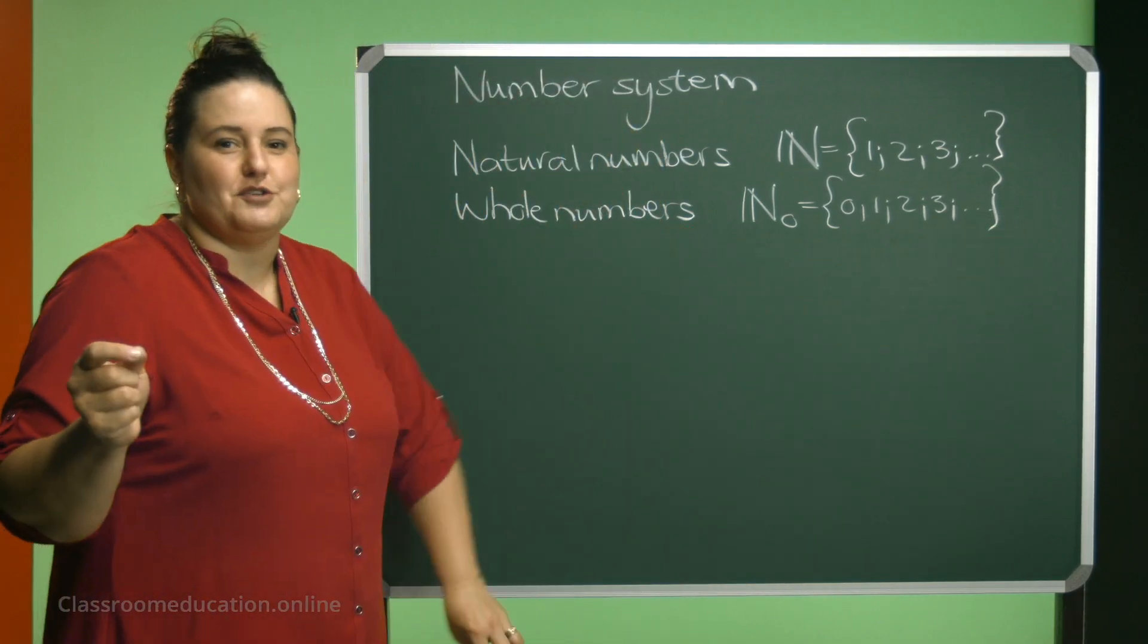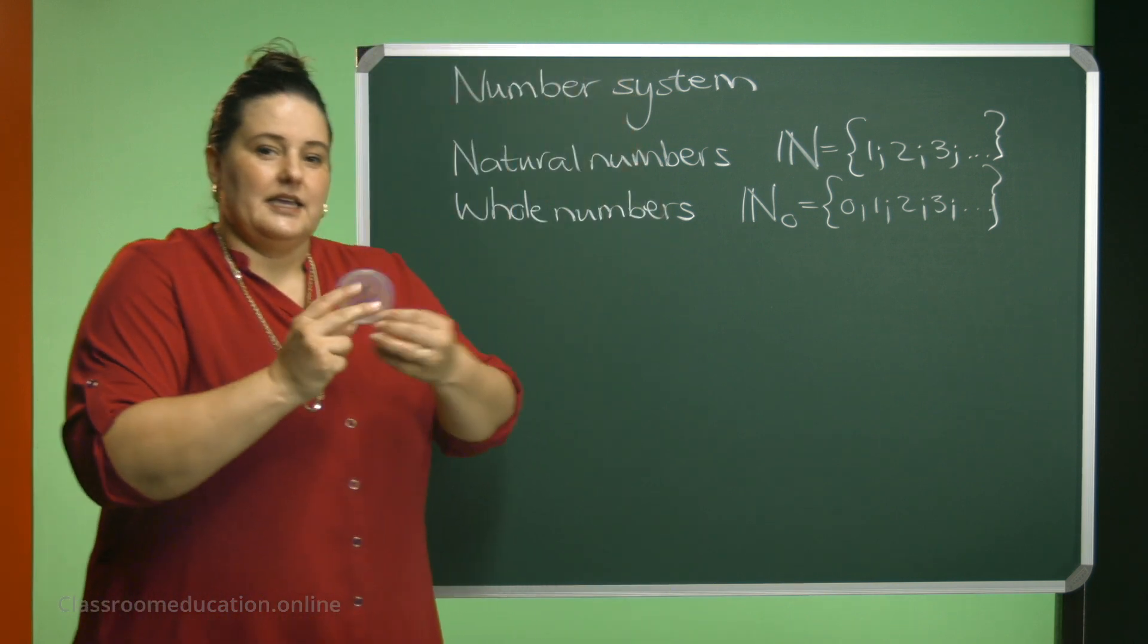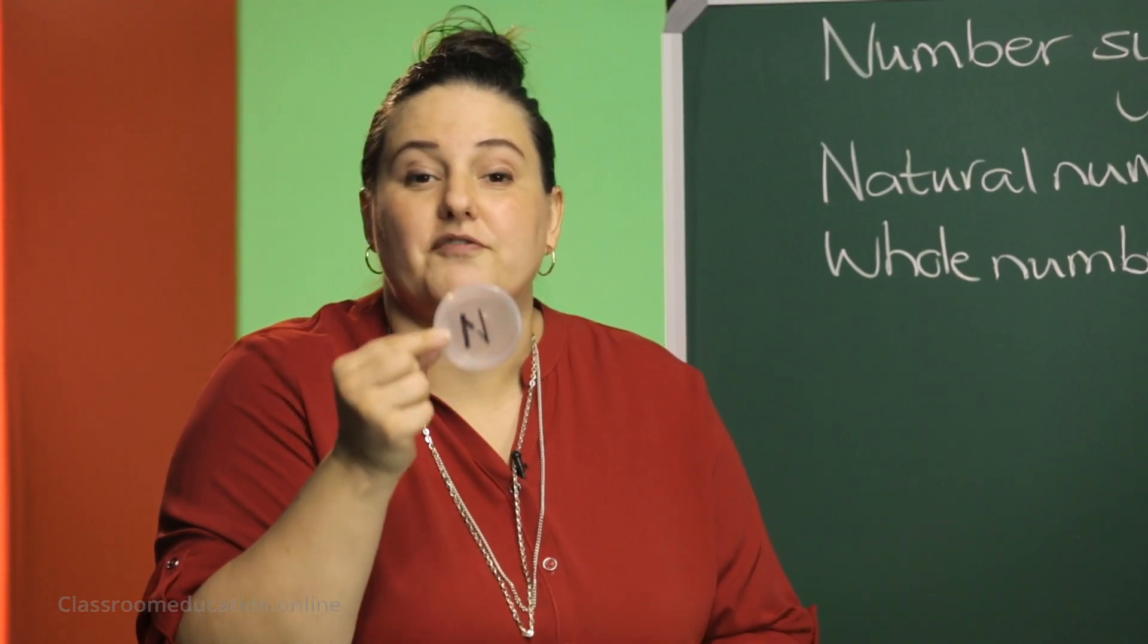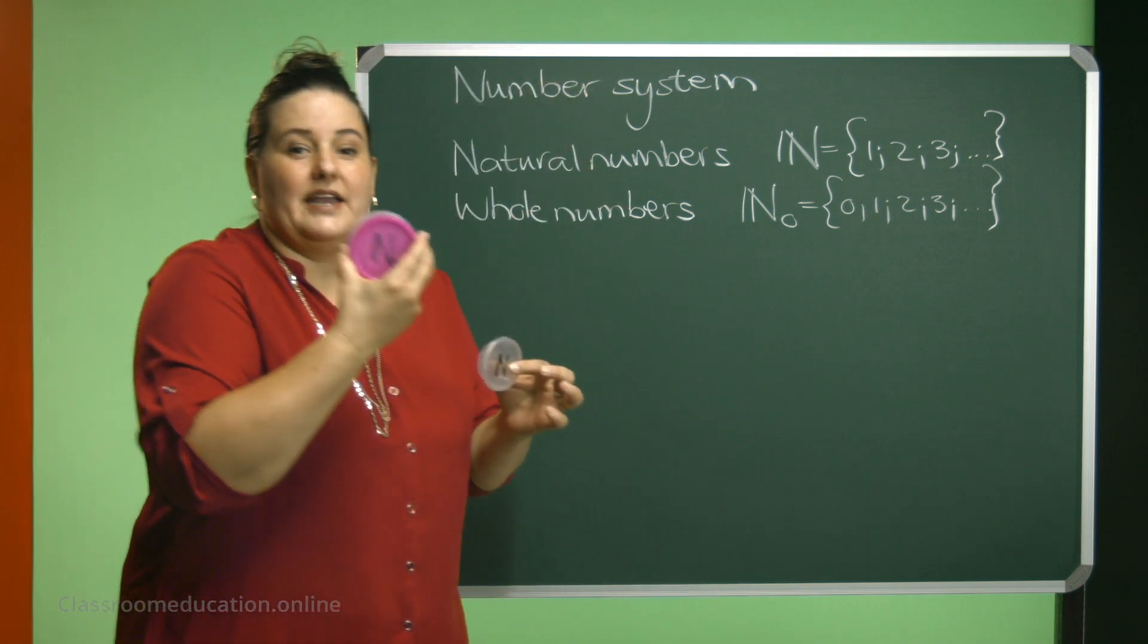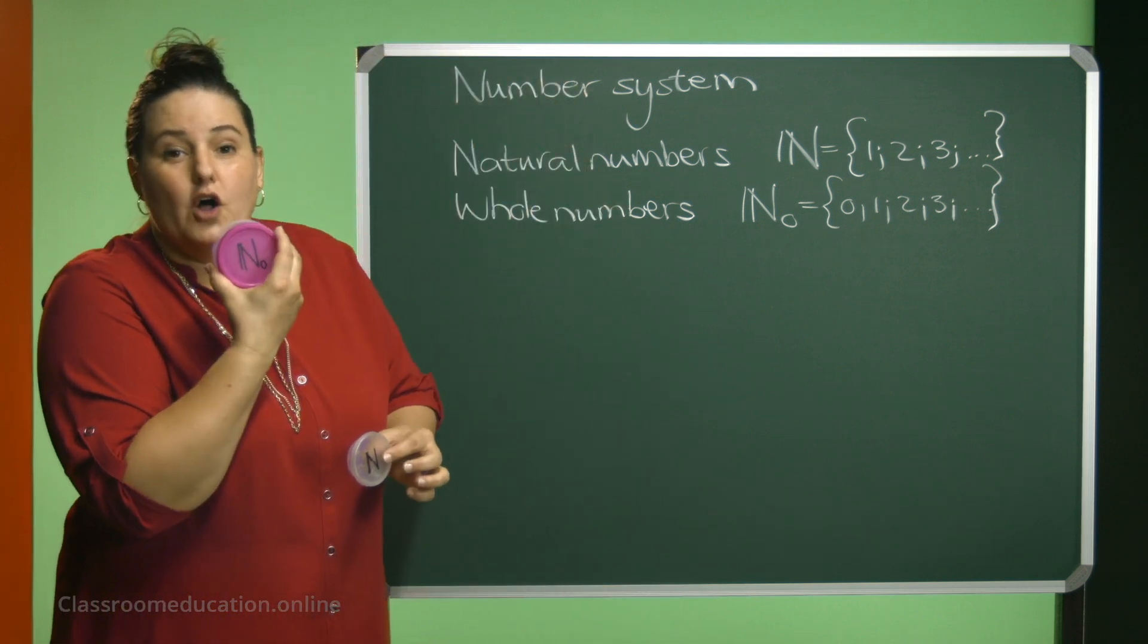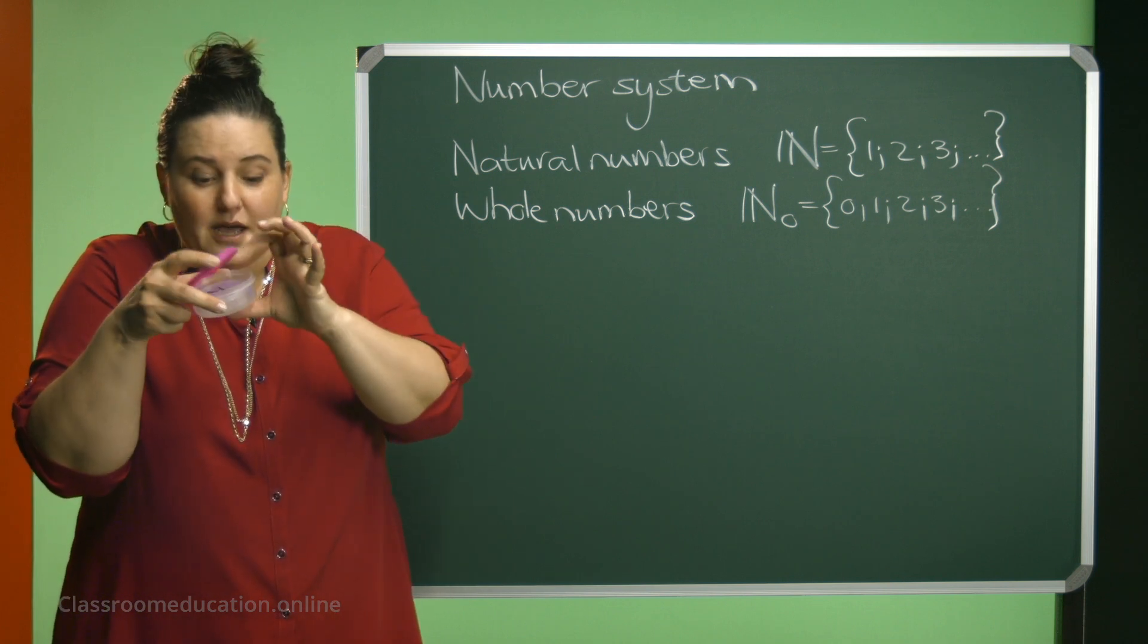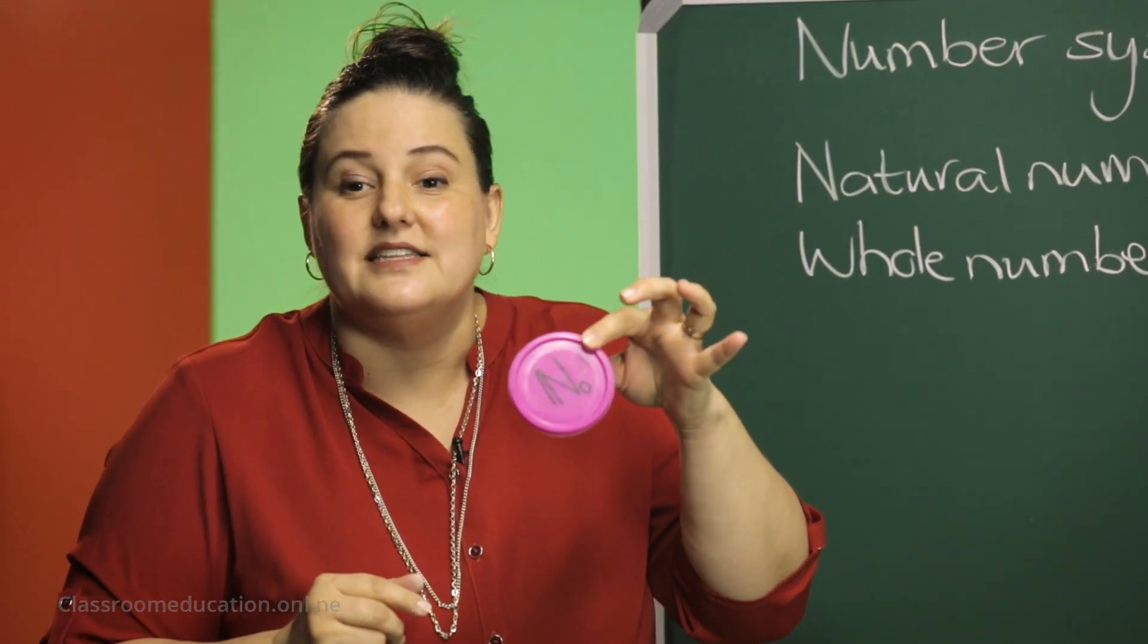Let me show it to you a bit more visually so that you understand. Here I have my set of natural numbers. And when I need to have my set of whole numbers, my set of whole numbers consist of all the natural numbers as well, and the 0.